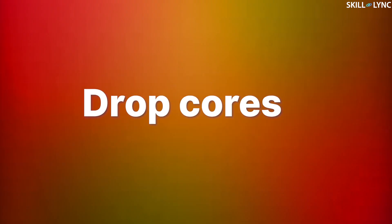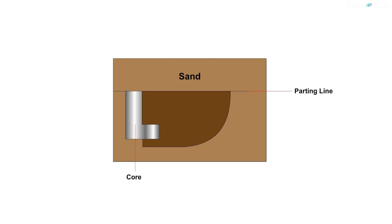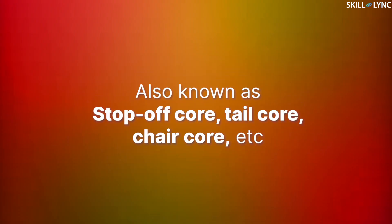Now let's move to drop cores. When a hole, recess, or a cavity required in a casting is not in line with the parting surface and instead is above or below it, then drop cores are used. As you can see in the image, a drop core is provided to give a cavity which is far below the parting line. Based on its shape and application, drop core is also known as top off core, tail core, and chair core.